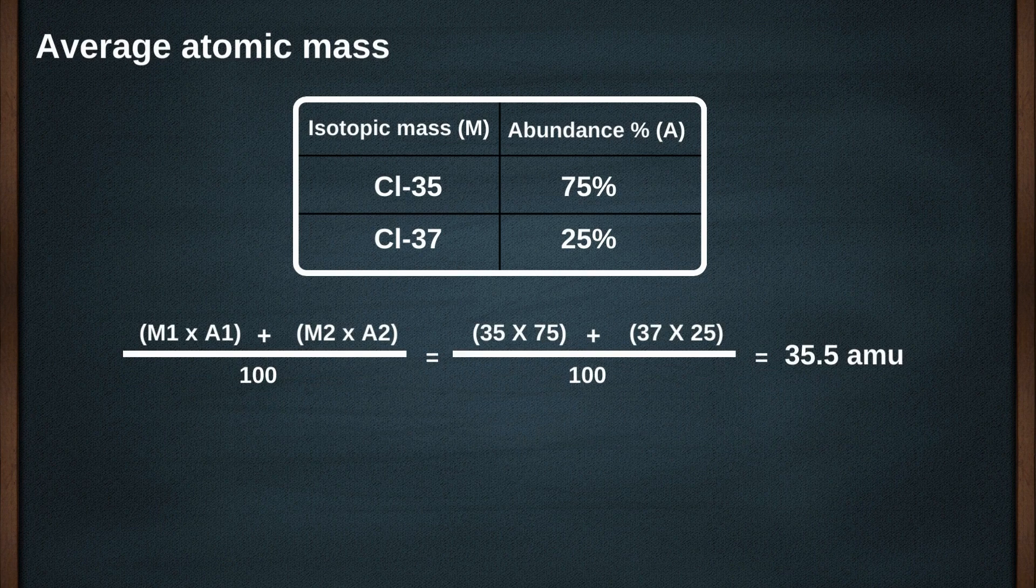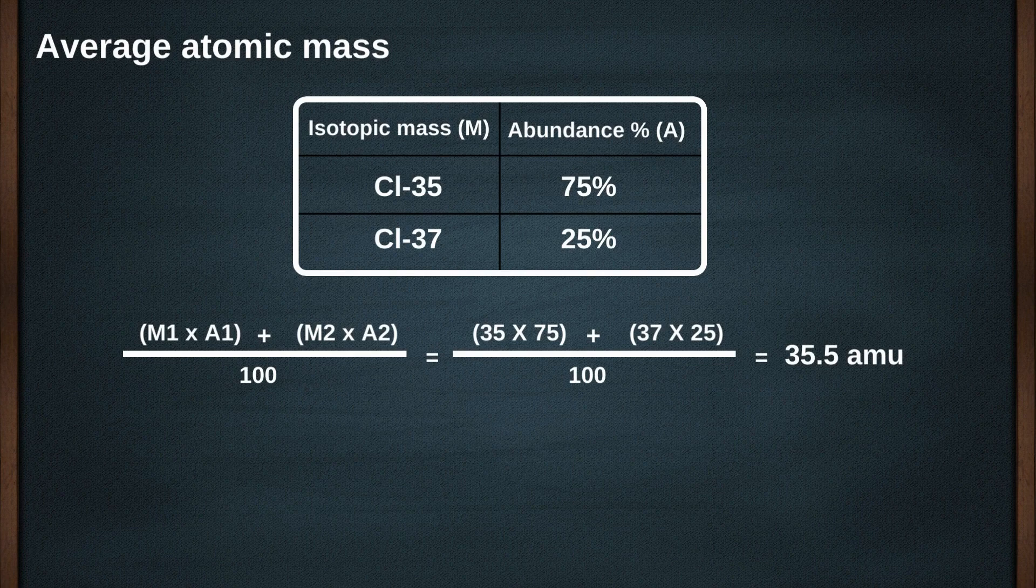On solving, the average atomic mass of chlorine is calculated to be 35.5 atomic mass units.